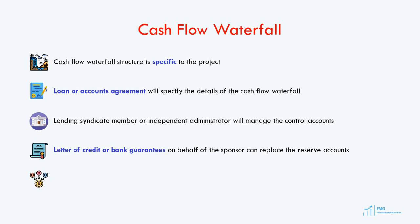The project company may be allowed to keep a cash reserve in the bank account it controls, which will be used to cover an unexpected expense. This provides some flexibility to the project company because cash from revenue is unavailable until it reaches the distribution account.